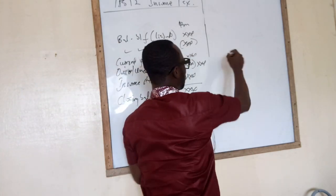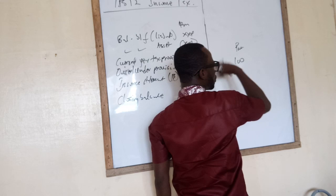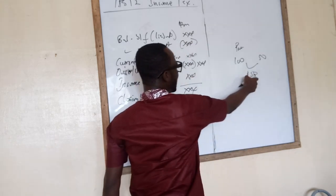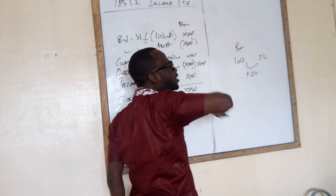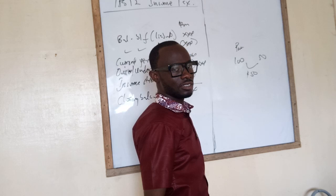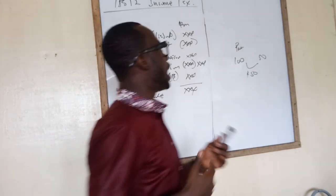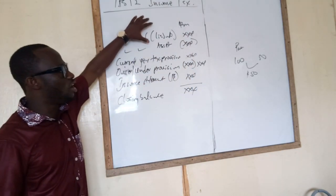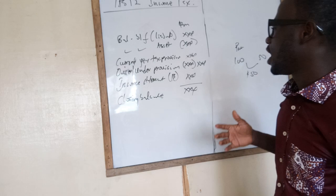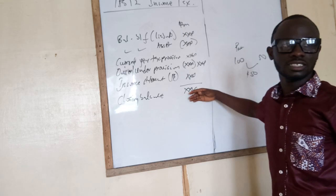If it is an over-provision: say you provisioned $100 last year but the tax authority said you should pay $50 — you have an over-provision of $50. This will reduce how much tax liability you are supposed to pay this year, which is why we subtract it from the current year tax. The tax charge for the year incorporates the brought-forward balance, current tax provision, over or under provision, and the closing deferred tax balance.